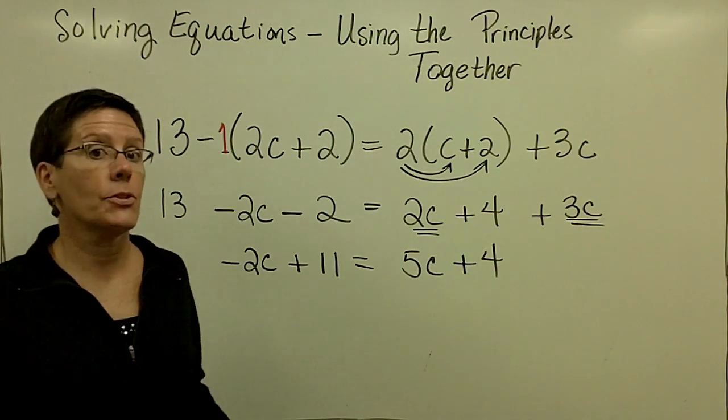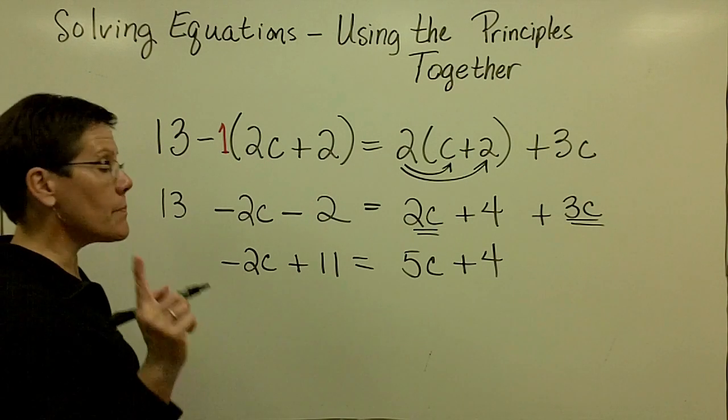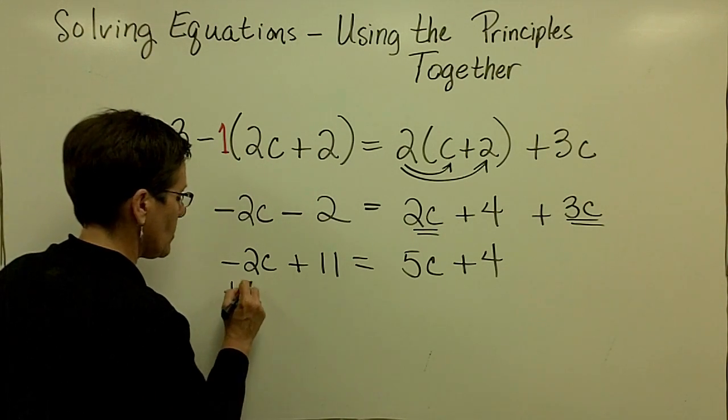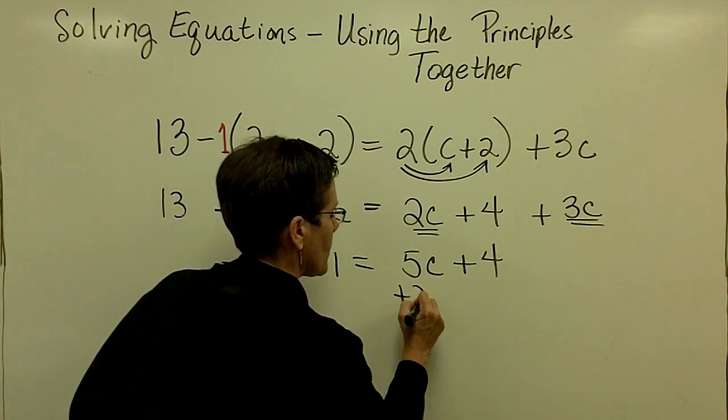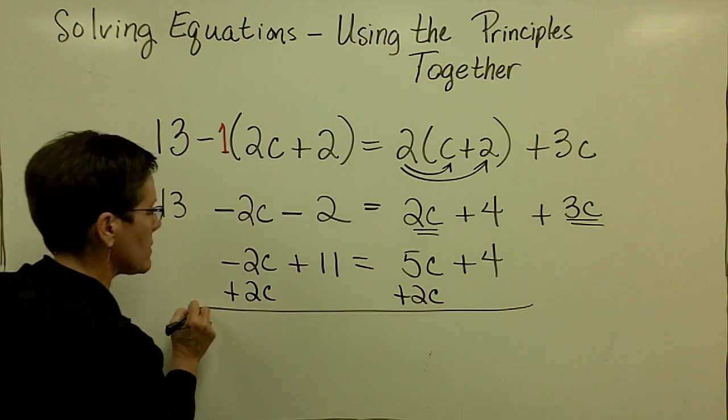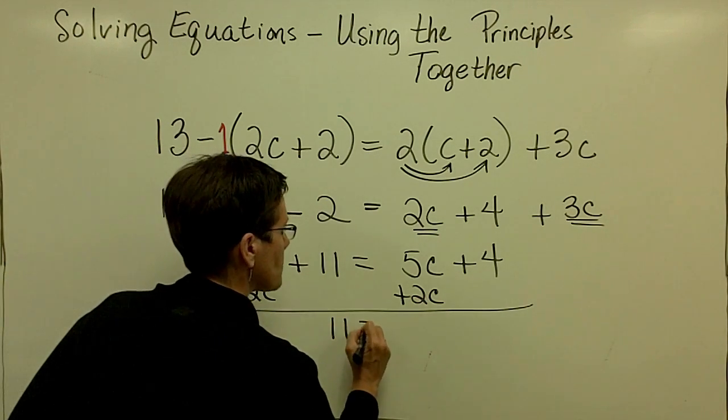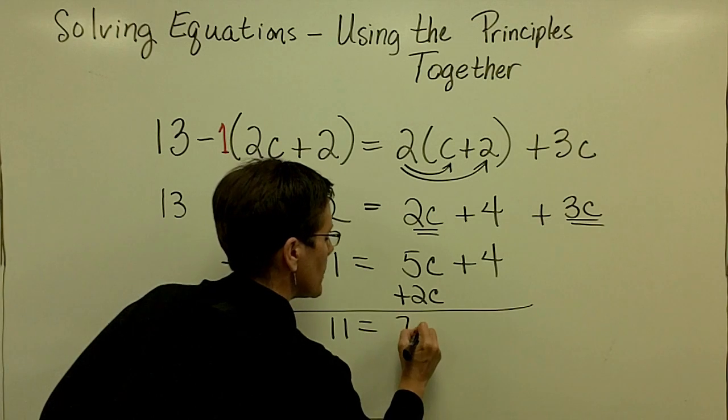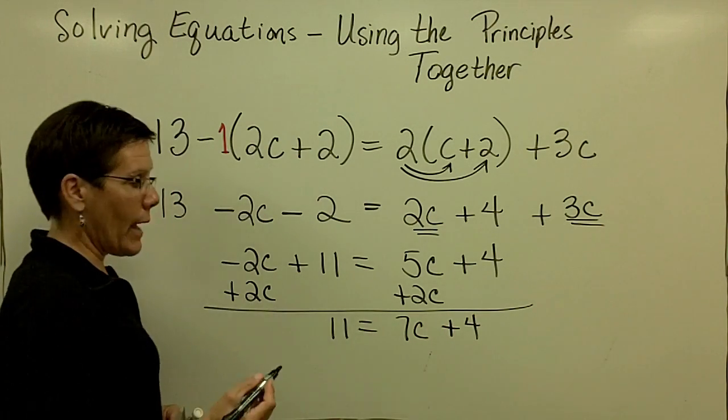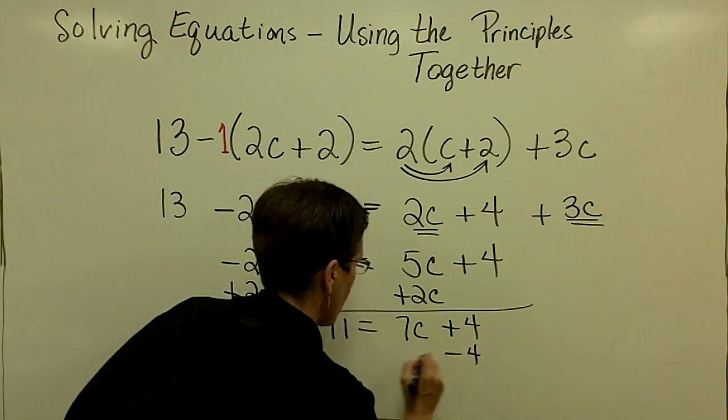And I'm ready to use the addition principle a couple of times. I'm going to choose to add 2c to both sides. I'm going to have a little bit of space limitations here. And 5 and 2 is 7c. And then I'm going to subtract 4 from both sides.